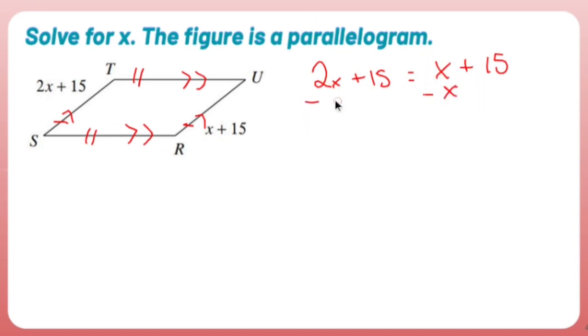Subtract x from both sides because we have x on both sides of the equal sign. 2x minus 1x is just an x. x plus 15 equals 15.